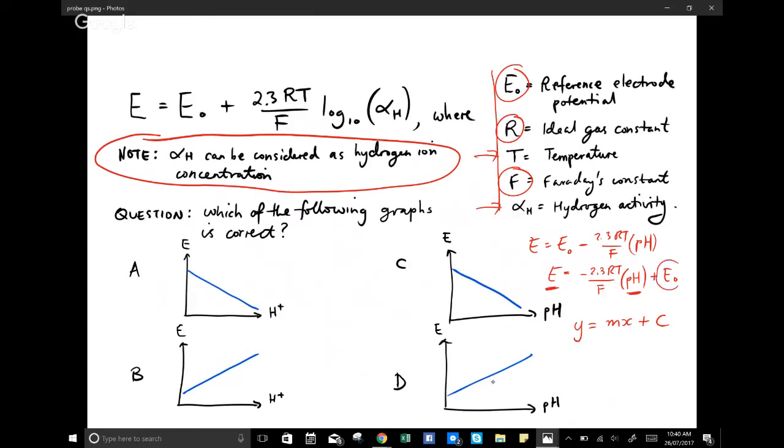A linear relationship where the E naught is the intercept. Our pH is the same as our X, which is that variable in the horizontal direction. And our E is the variable, which is on our Y axis. And this whole thing here is M. M is your gradient. And that tells you the slope of the line. So if you look at this in conjunction with Y is equal to MX plus C, you should see that if we had a graph of E versus pH, we should have a straight line with a negative gradient. And that's C.